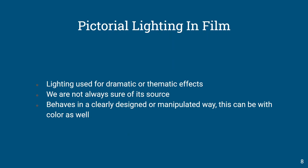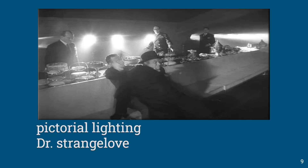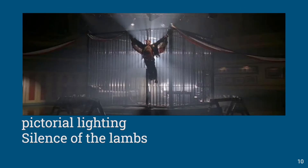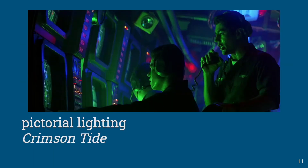Pictorial lighting is lighting used for a dramatic or thematic purpose. We're not always sure of the source of light, and it behaves in a clearly designed or manipulated way. From Dr. Strangelove — they're inside this war room with light coming in; we're not sure of the source and never really told exactly where we are. From Silence of the Lambs, we can see the lighting is clearly fabricated. We don't really care where the source is — it's multi-sourced to light the scene, more for design than actual realism.